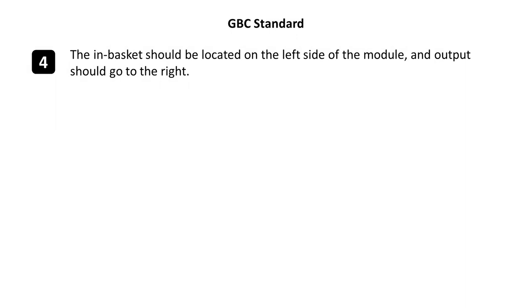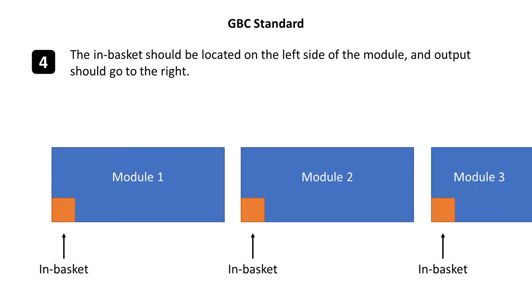Rule four: the in-basket should be located on the left side of the module and output should go to the right. This just provides a standard direction for building modules, so modules can be daisy chained together. By rule, all GBC modules should move from left to right when you're looking at the module from the front.